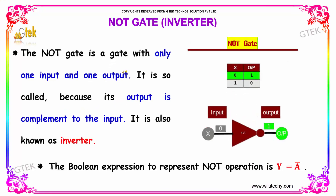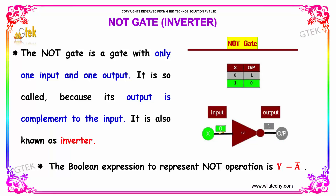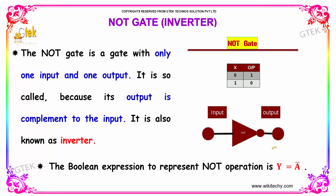Let's move on to the NOT-GATE. The NOT-GATE is a gate with only one input and one output. Because its output is complement to the input, it is also known as an inverter. The Boolean expression to represent the NOT-condition is Y equals A complement.